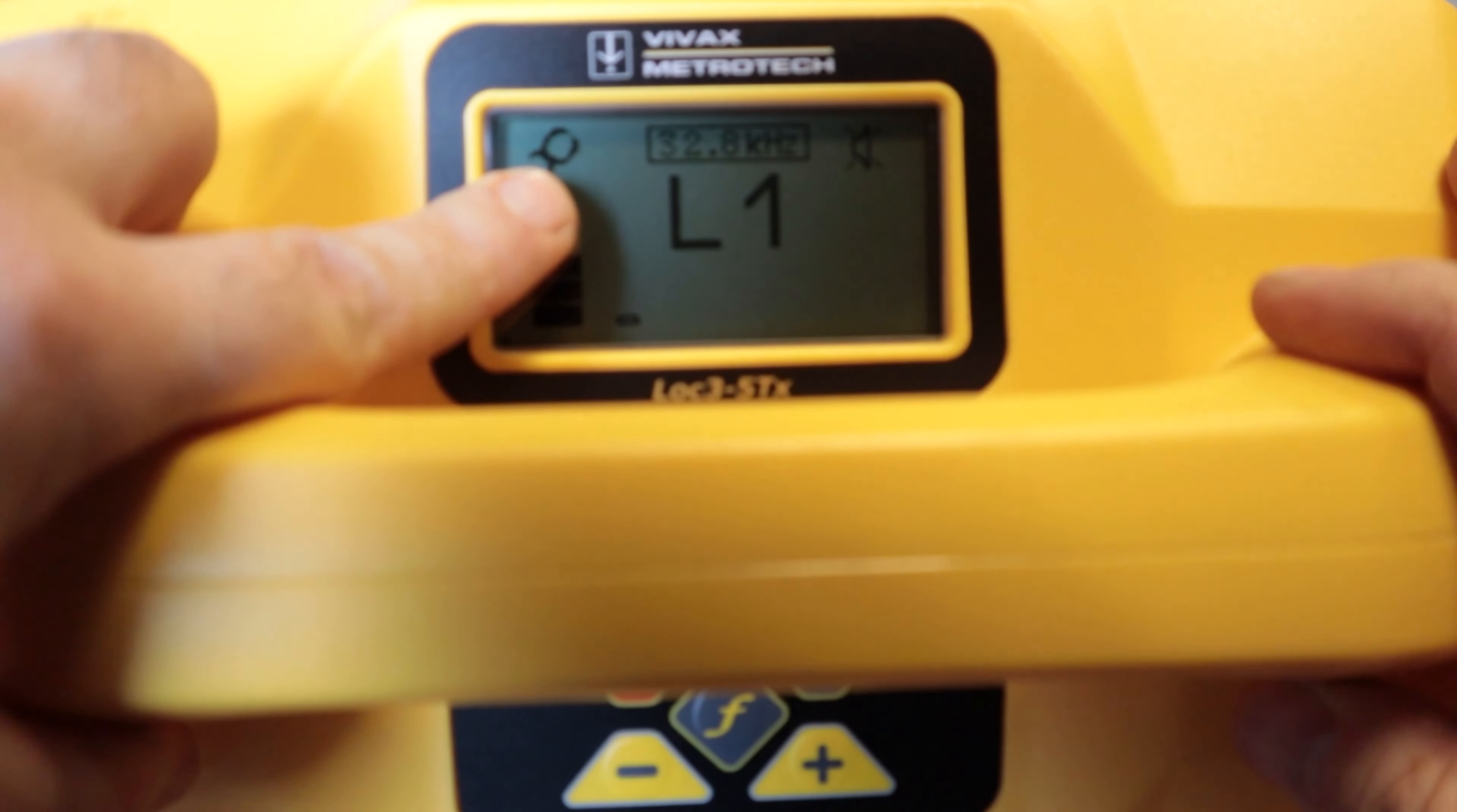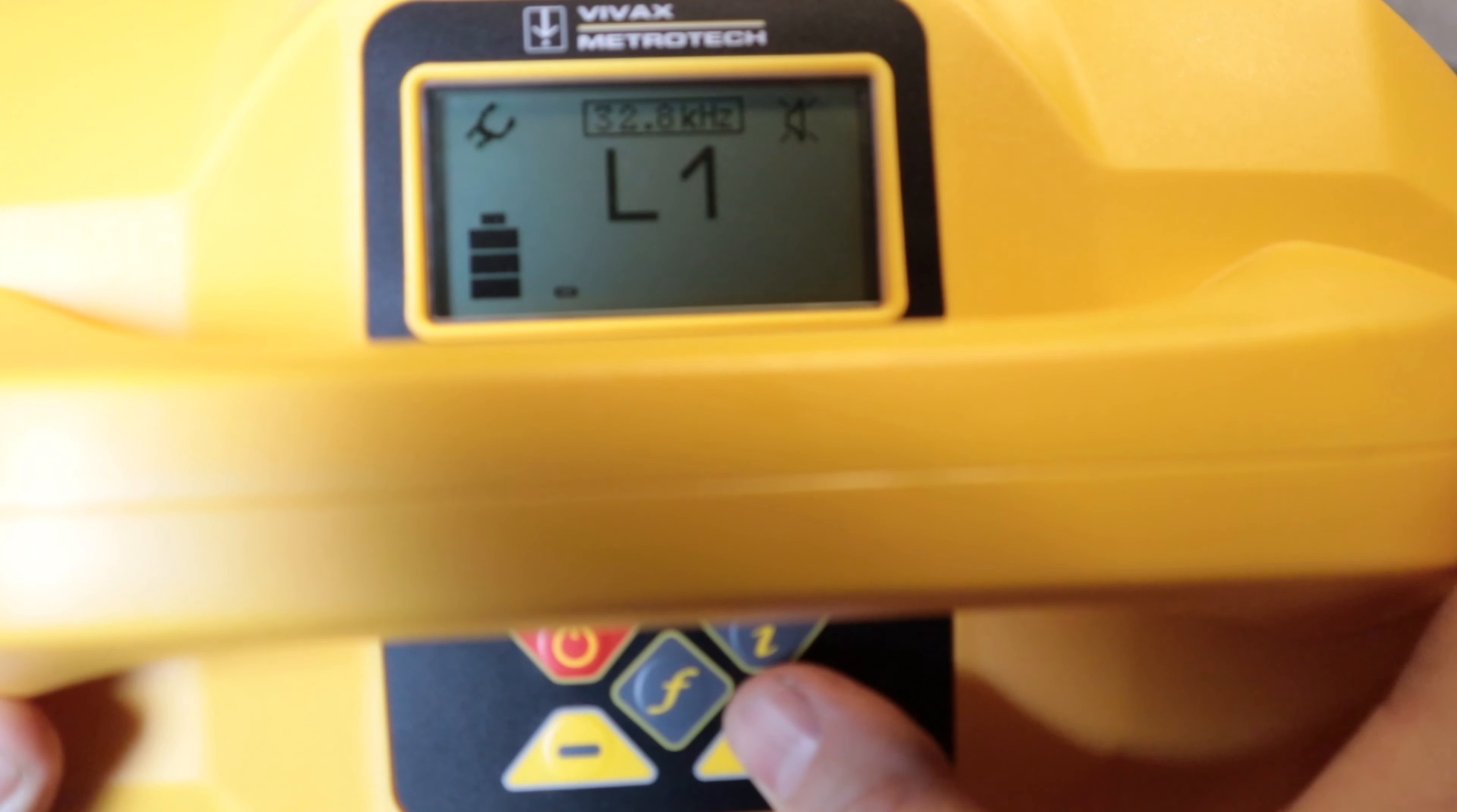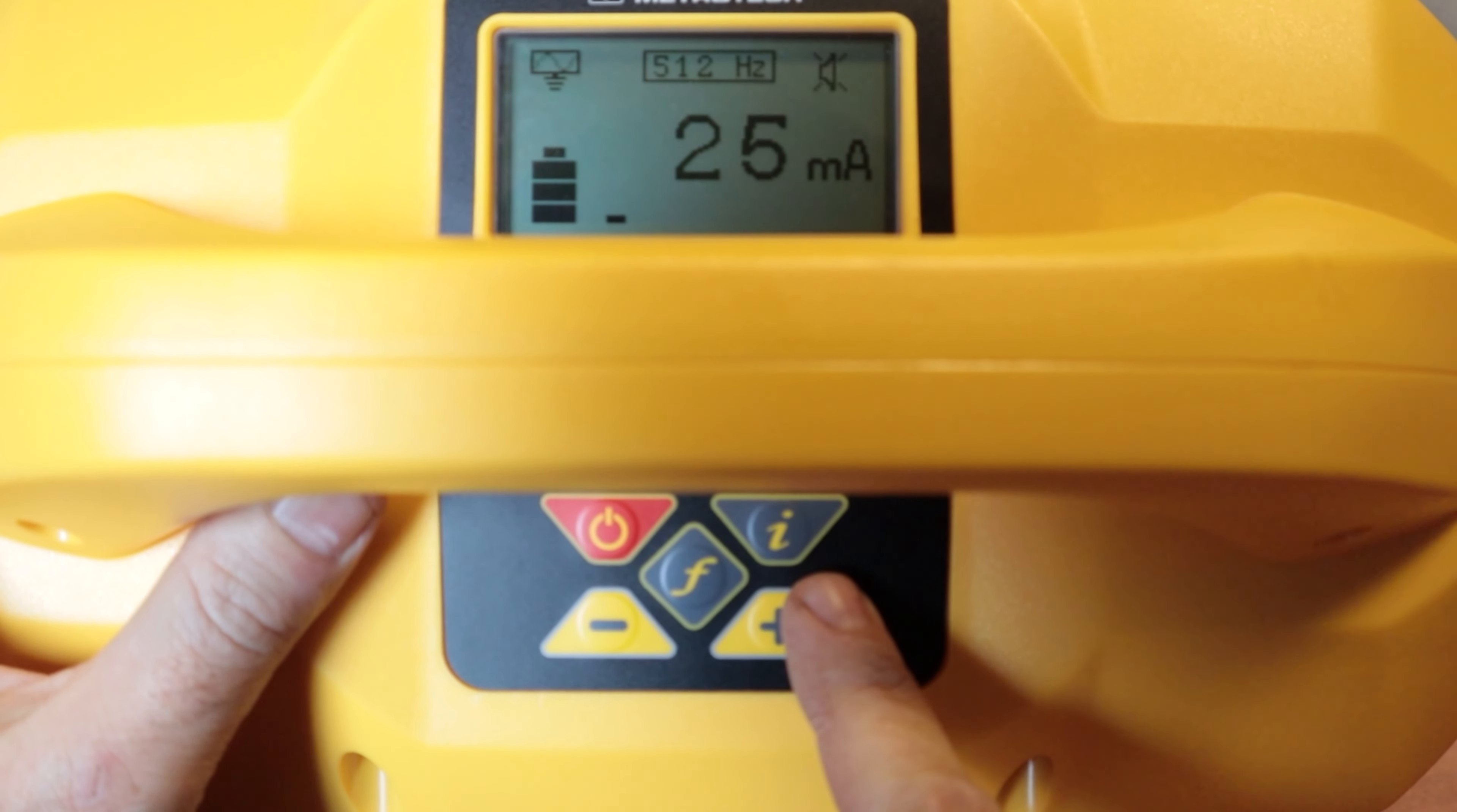I'll show you what it looks like when we have a clamp plugged in. Now I have a signal clamp plugged in which shows me by this icon right here, simply looks like a clamp. Goes to 32.8 because that was the last frequency I was using with the clamp plugged in and I can use my plus and minus buttons to increase my output here up to level 3. Now I'm back to my direct connection leads and we're going to go through some of the functions in this actual transmitter.